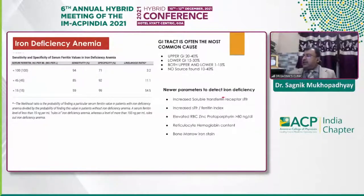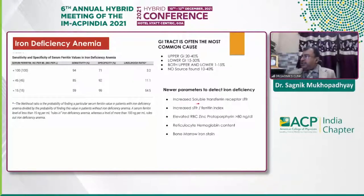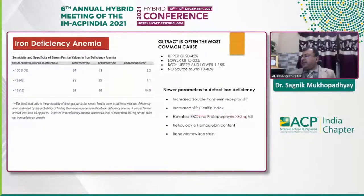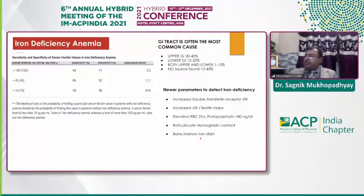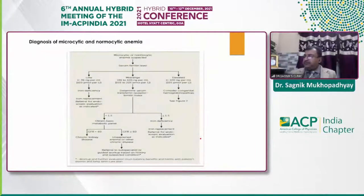There are newer parameters to detect iron deficiency or subclinical iron deficiency. Increased soluble transferrin receptor (sTfR) is a very important parameter. Increased sTfR:ferritin ratio and elevated RBC zinc protoporphyrin level greater than 80 are also useful — zinc protoporphyrin level increases whenever there is reduced hematopoiesis due to iron deficiency. Reticulocyte hemoglobin content and bone marrow iron stain are also parameters to keep in mind when diagnosing iron deficiency anemia.